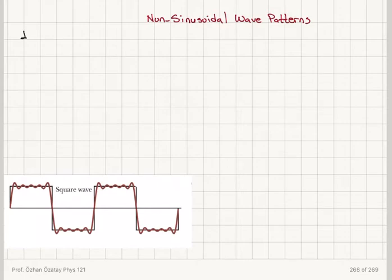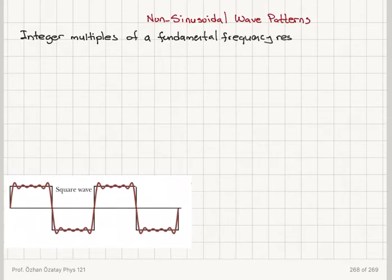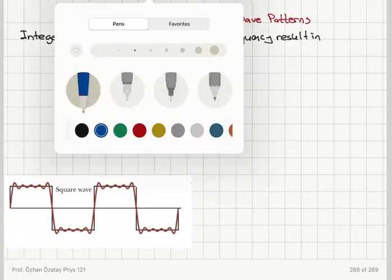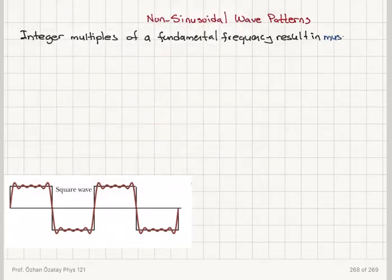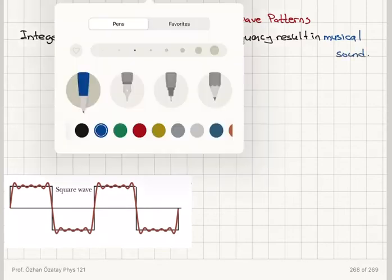When we have integer multiples of a fundamental frequency, that means we have a harmonic series in a sound. This is going to result in musical sound, basically harmony and musical sound.